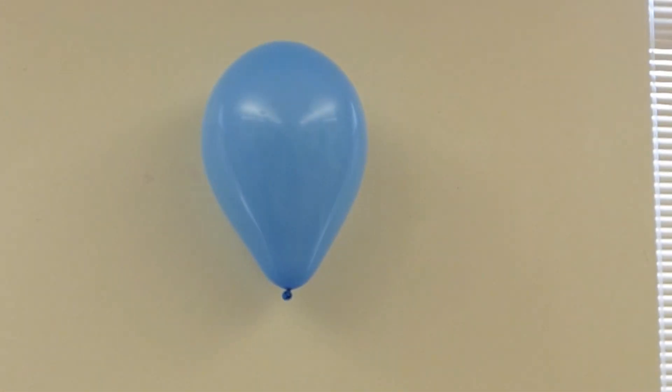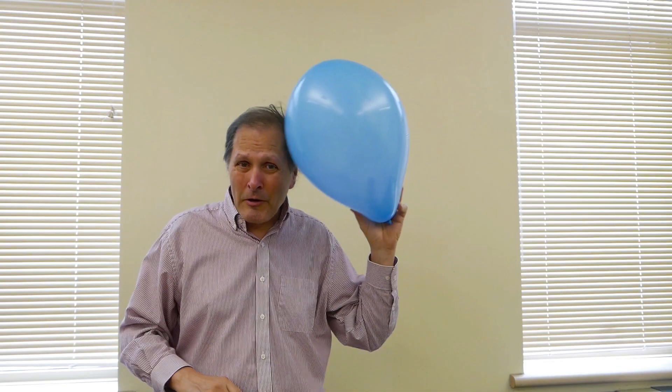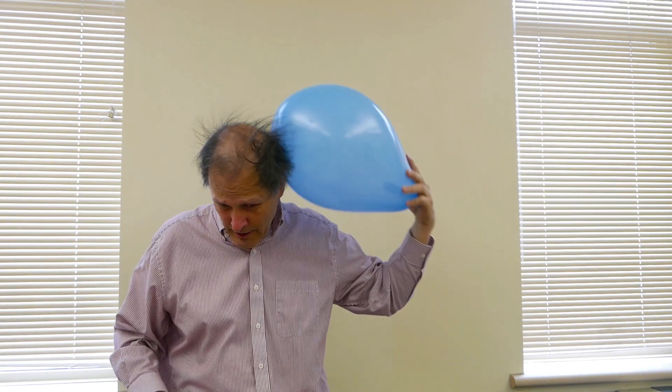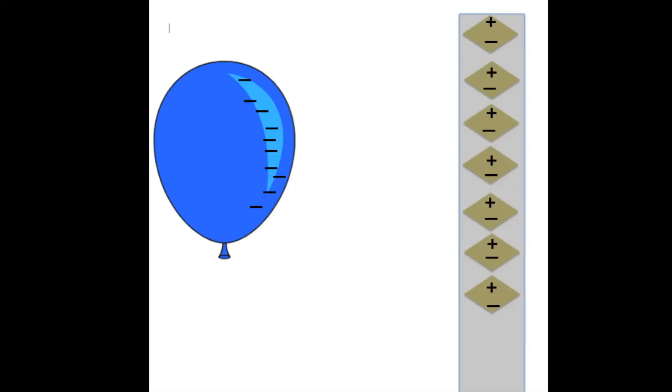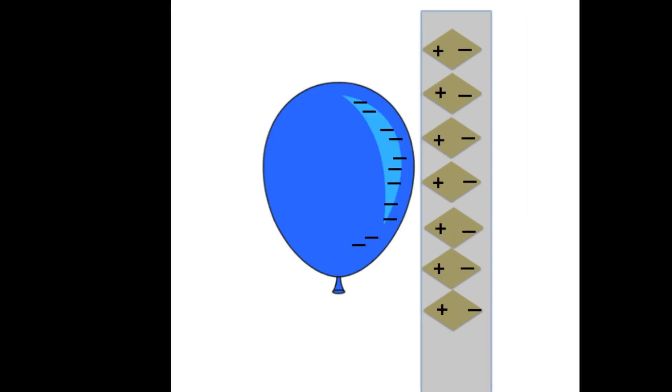Now let's apply this theory to the balloon on the wall. As I rub the balloon against my head, it makes the balloon negatively charged. The wall itself is neutral, but as we bring the balloon closer to it, the negative charges causes the particles in the wall surface to become polarized, making an attraction between the balloon and the wall surface. If we move the balloon away, the wall becomes neutral again.